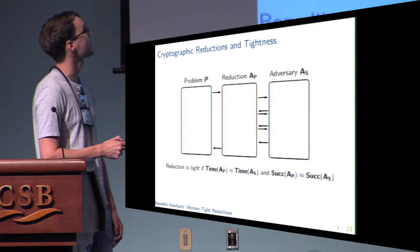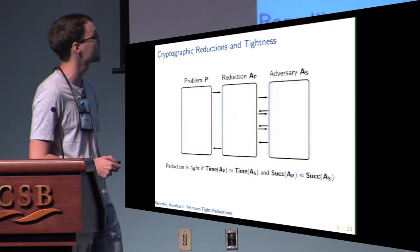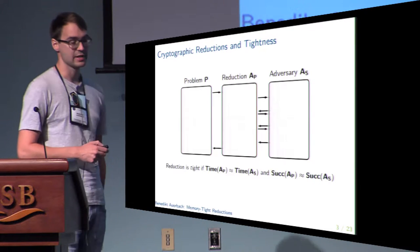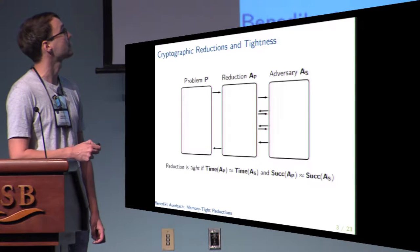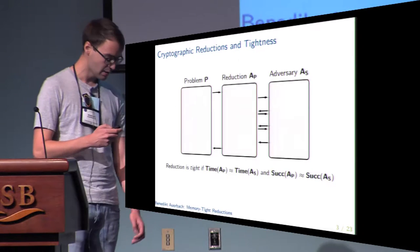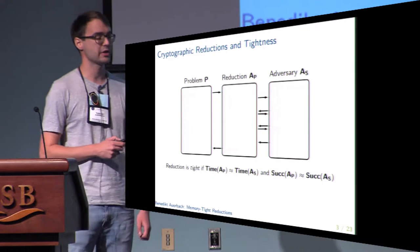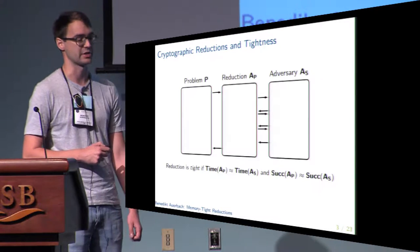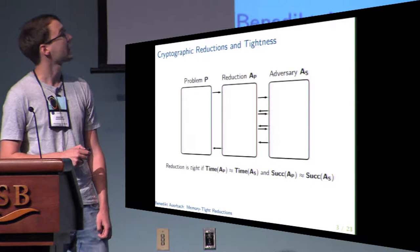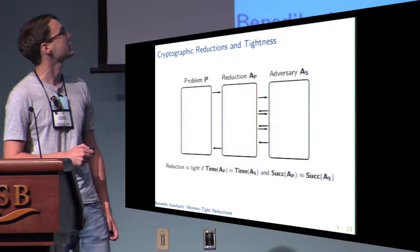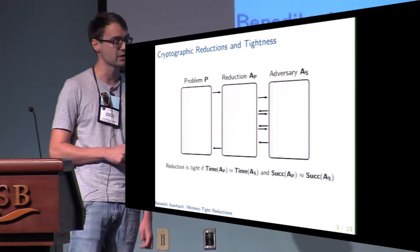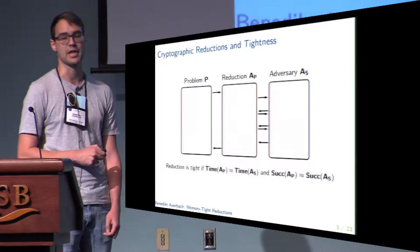More precisely, the algorithm we construct will run the adversary as a subroutine and answer potential oracle queries of it. This implies that the running time of our reduction will be at least the running time of the adversary, and the same holds for the memory consumption. Now the tightness of our reduction can be seen as a measure of its quality. What we usually do is compare the resources used by our algorithm to the resources used by the adversary it runs as a subroutine.